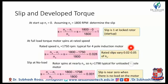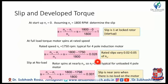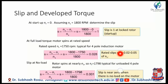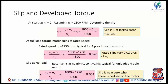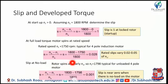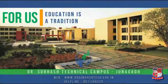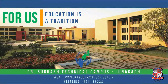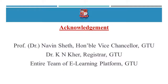The full load slip is typically in the range of 0.02 to 0.06. The rotor spins nearly at synchronous speed Ns at full load. The rated slip range is up to 0.06.